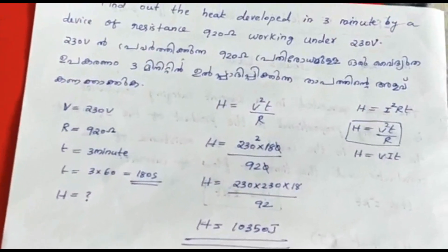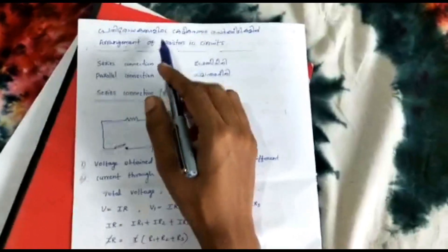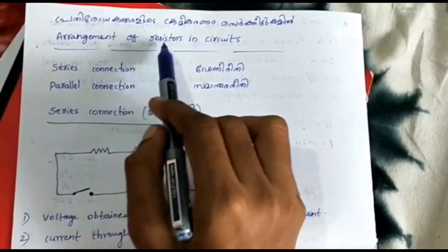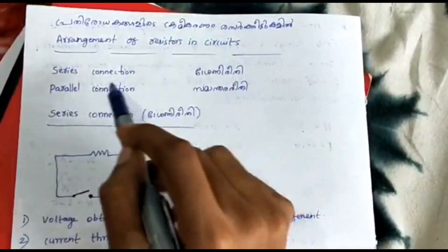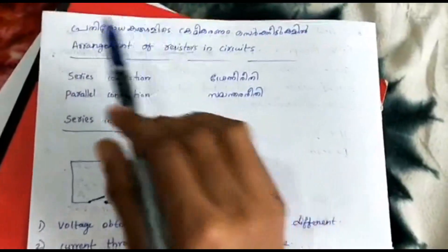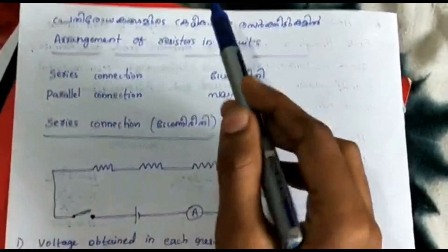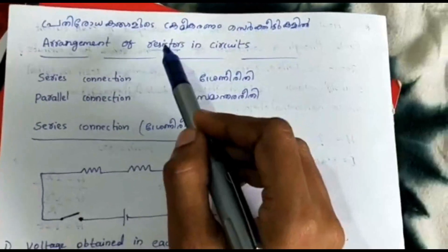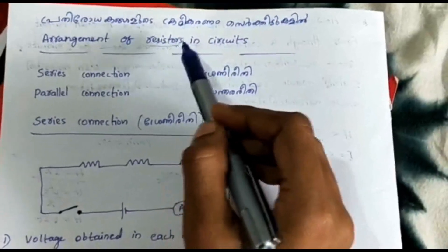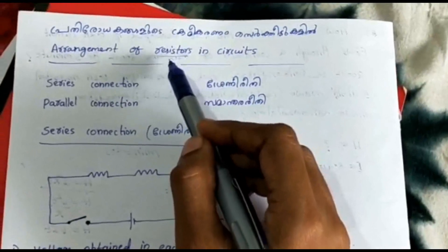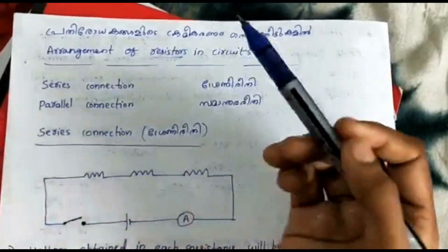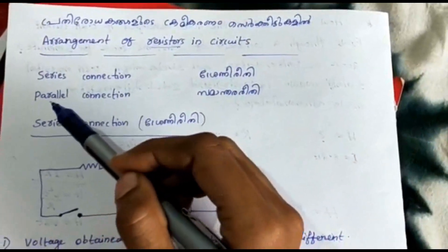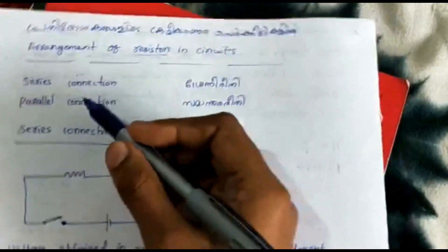Let's start the next topic. We are going to learn the third topic — the arrangement of resistors in circuits. We are going to learn how to connect the circuits. When we connect them, we are going to control the current. Resistance controls what we are running through the circuits.